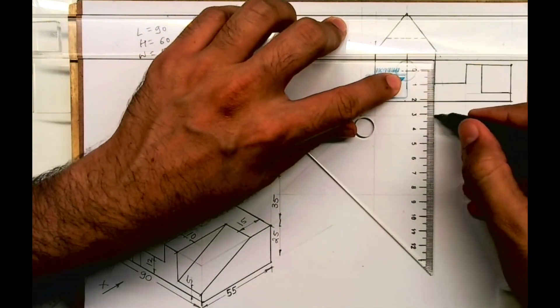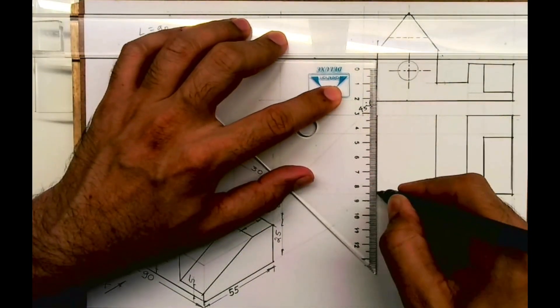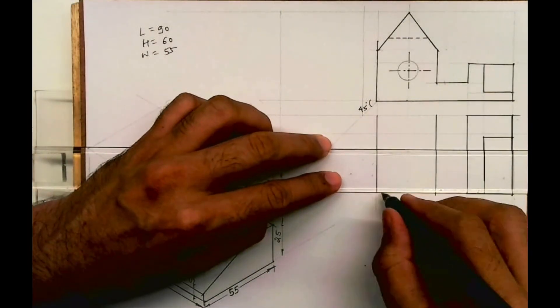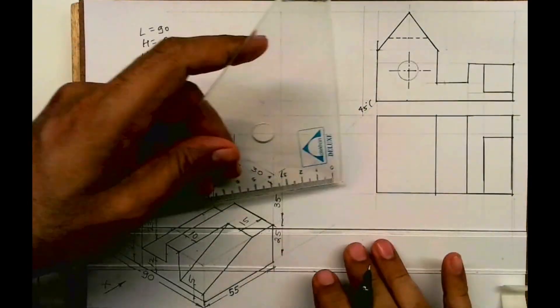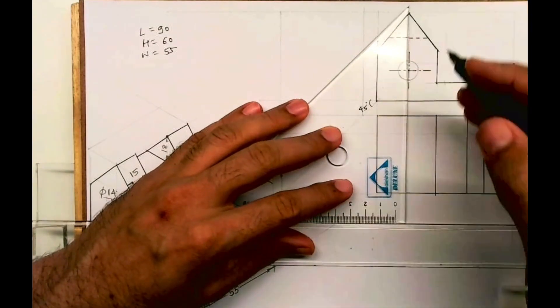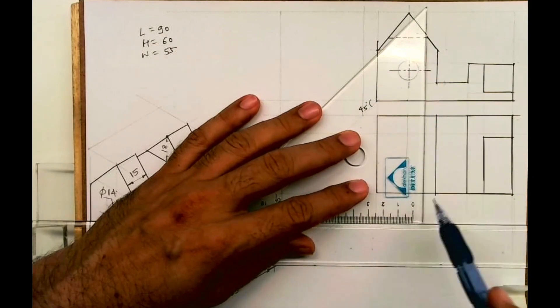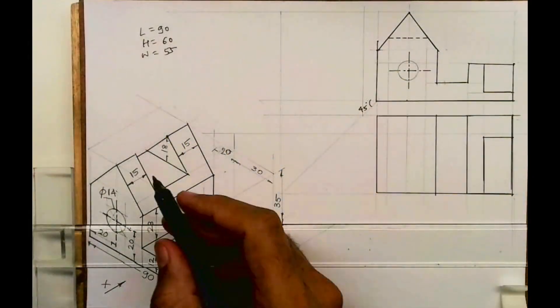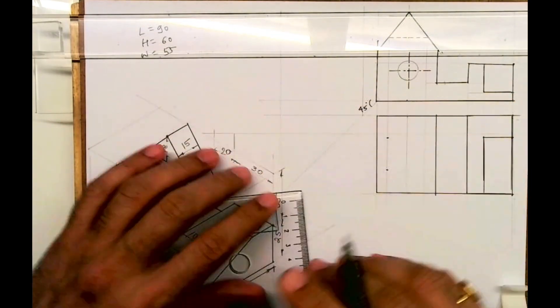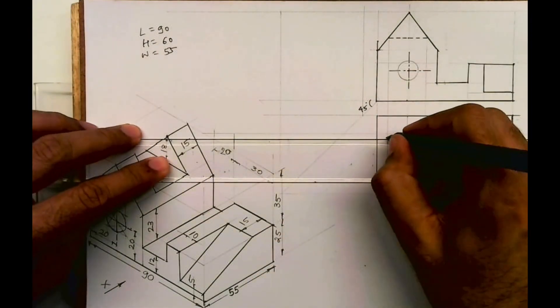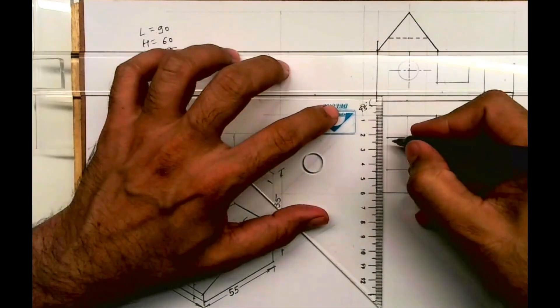Then from here you draw vertical line, from here also you draw vertical line, and draw horizontal. Then extend all these lines. See, this is 15. Remember, this projection we got from the dotted line from front view. We are taking 15 and we are drawing this.